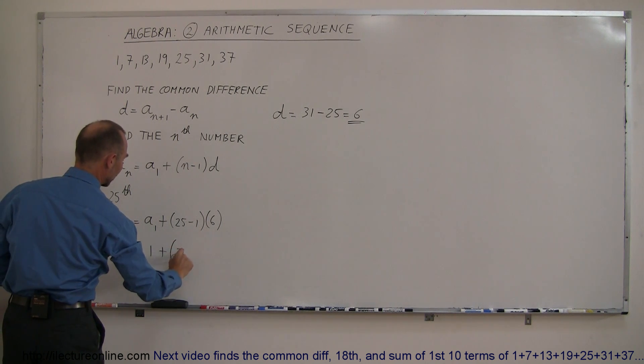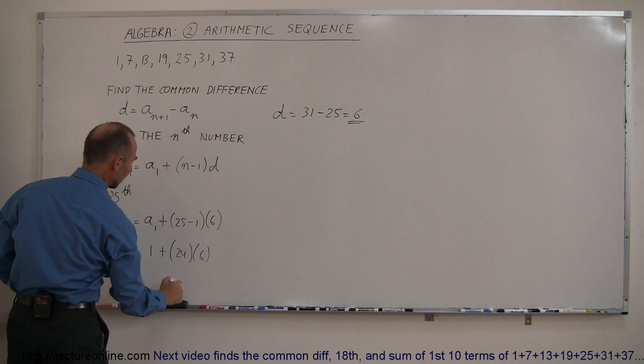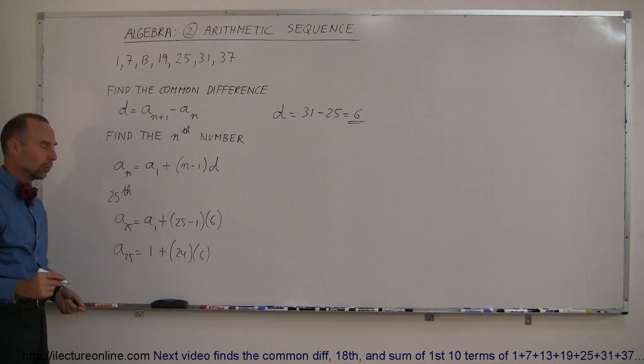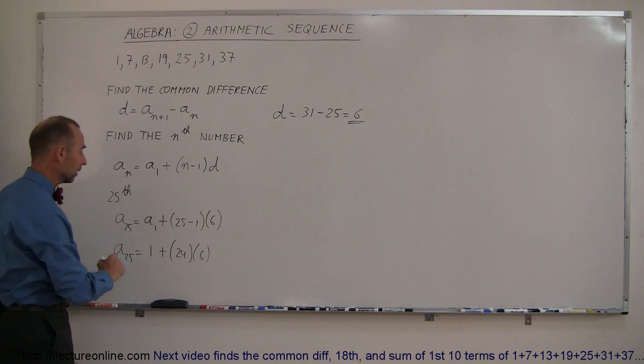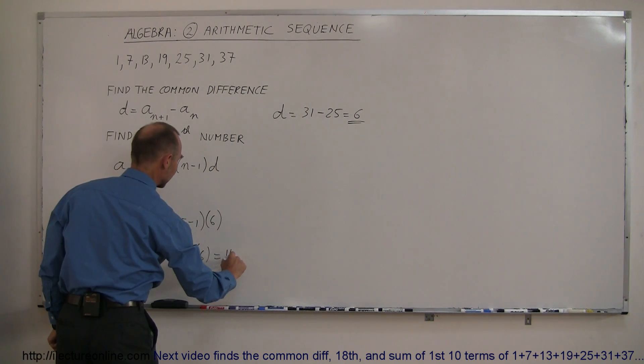And a sub 1 is the first one in the sequence, so therefore a 25 is equal to 1 plus 25 minus 1, which is 24, times 6. Now 6 times 20 is 120, 6 times 4 is 24, that's 144 plus 1, which is 145.